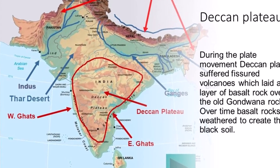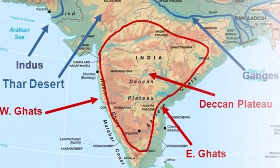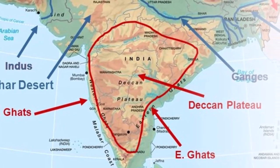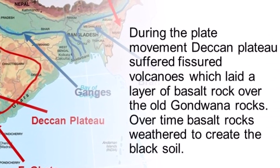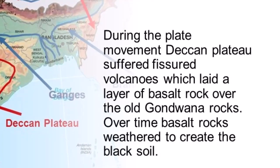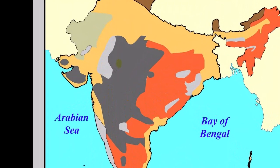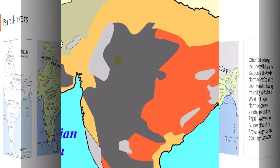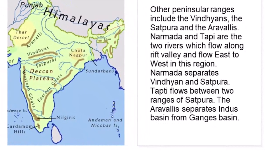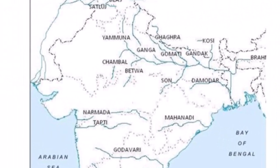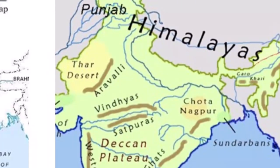The Southern Peninsula part of the Indian Plate comprises narrow mountain ranges of the Eastern Ghats and Western Ghats, with the Deccan Plateau in between, and coastal plains on the flanks. During the plate movement, the Deccan Plateau suffered fissured volcanoes which laid a layer of basalt rock over the old Gondwana rocks. Over time, the basalt rocks weathered to create black soil. Other peninsular ranges include the Vindhyas, the Satpura and the Aravalli. Narmada and Tapi are the two rivers which flow along the Rift Valley from east to west. Narmada separates the Vindhyas and Satpura, Tapi flows between two ranges of Satpura, and the Aravalli separates the Indus Basin from the Ganges Basin.